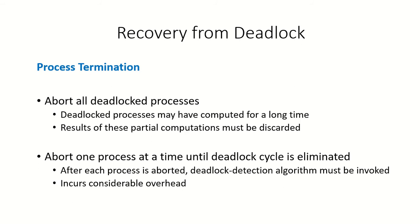In this video we are going to discuss recovery from deadlock. Let's say a deadlock detection algorithm was run and it was found out that processes P1, P2, P3 are in a deadlock. So how can we recover from this deadlock? One of the ways of handling this is process termination. There are two ways in which process termination can be done.